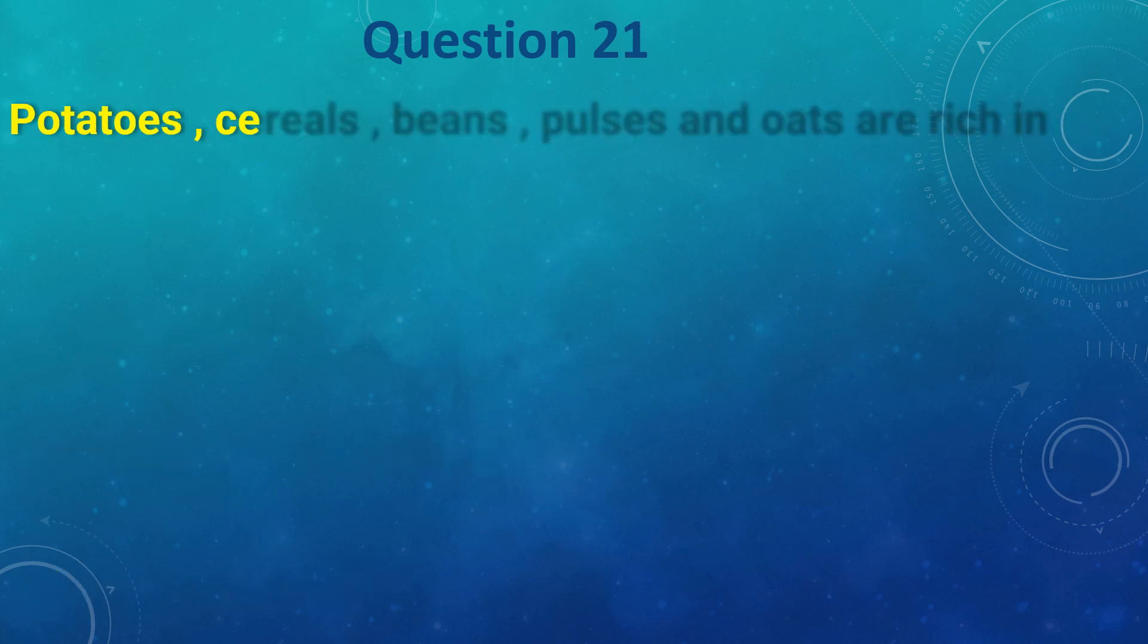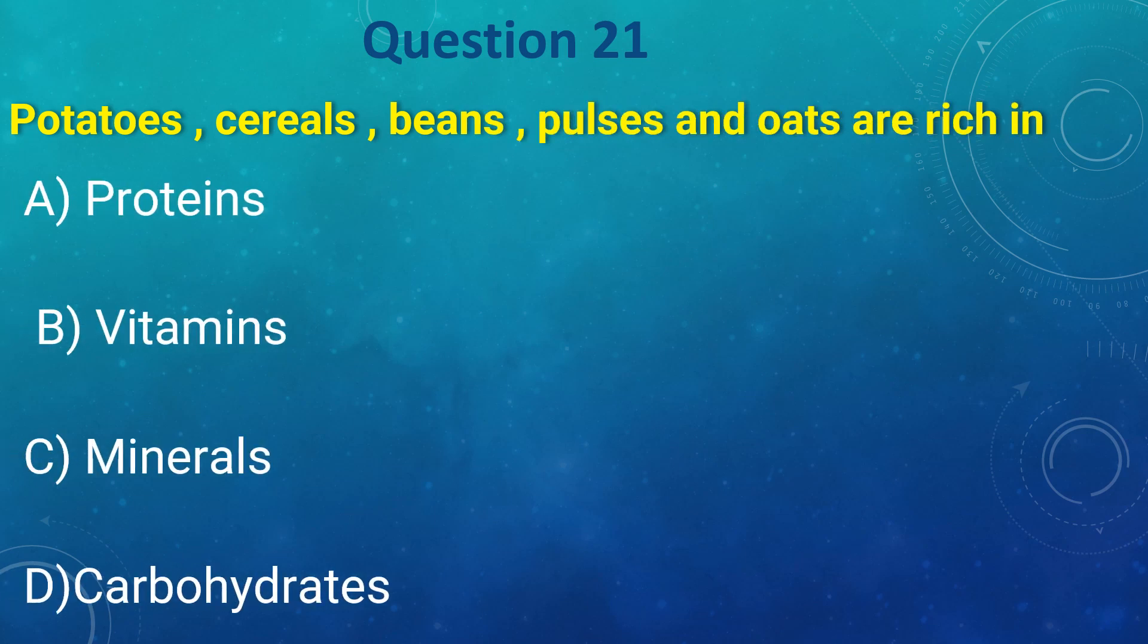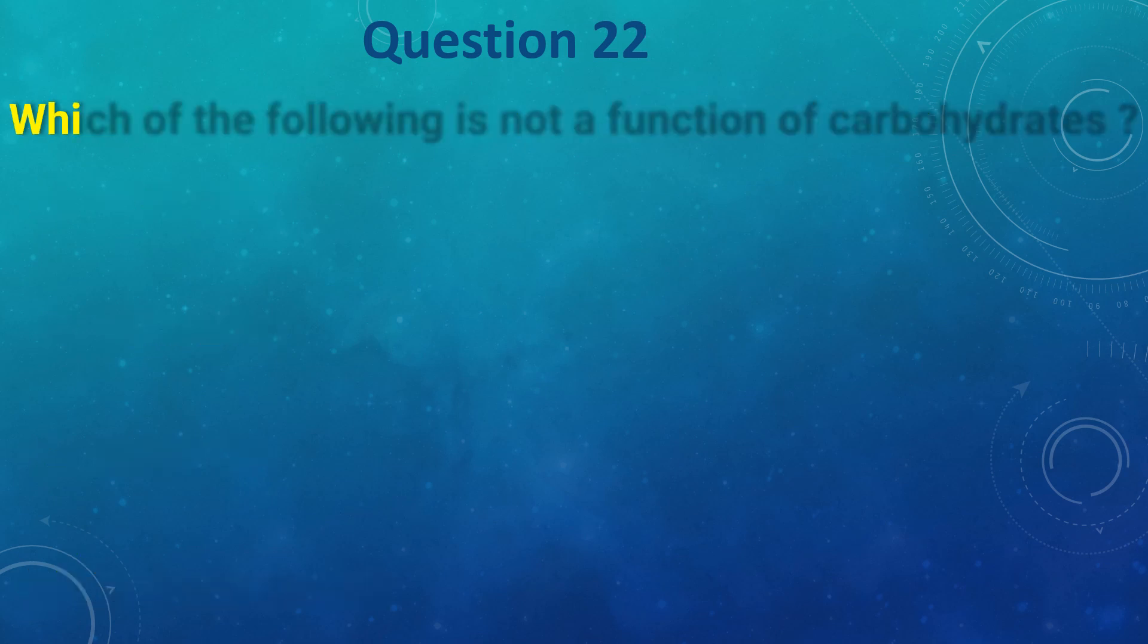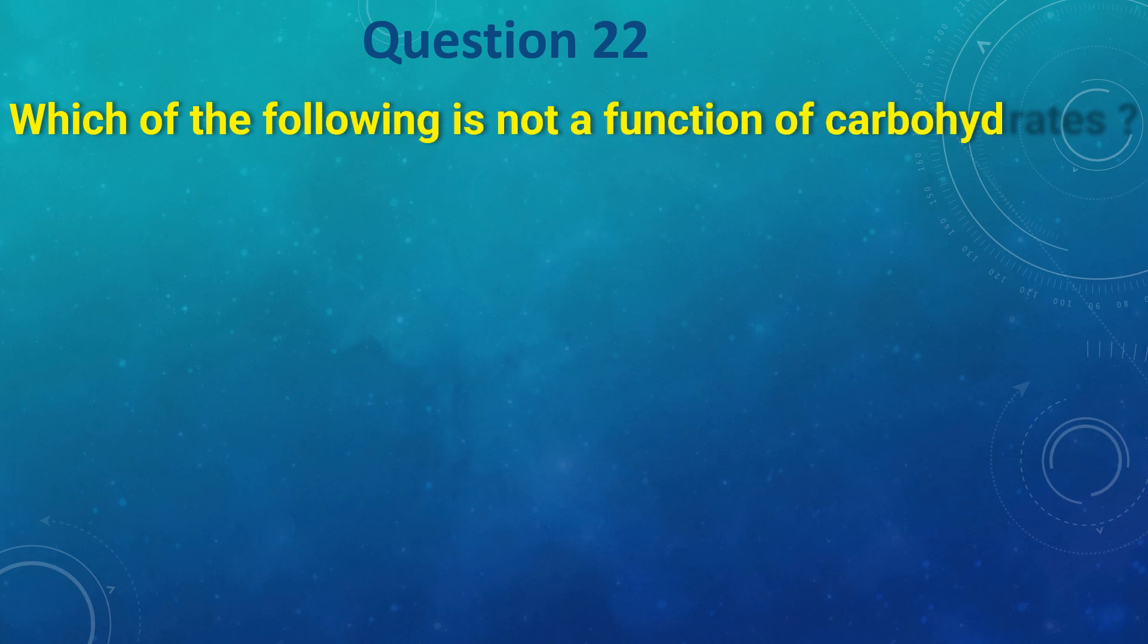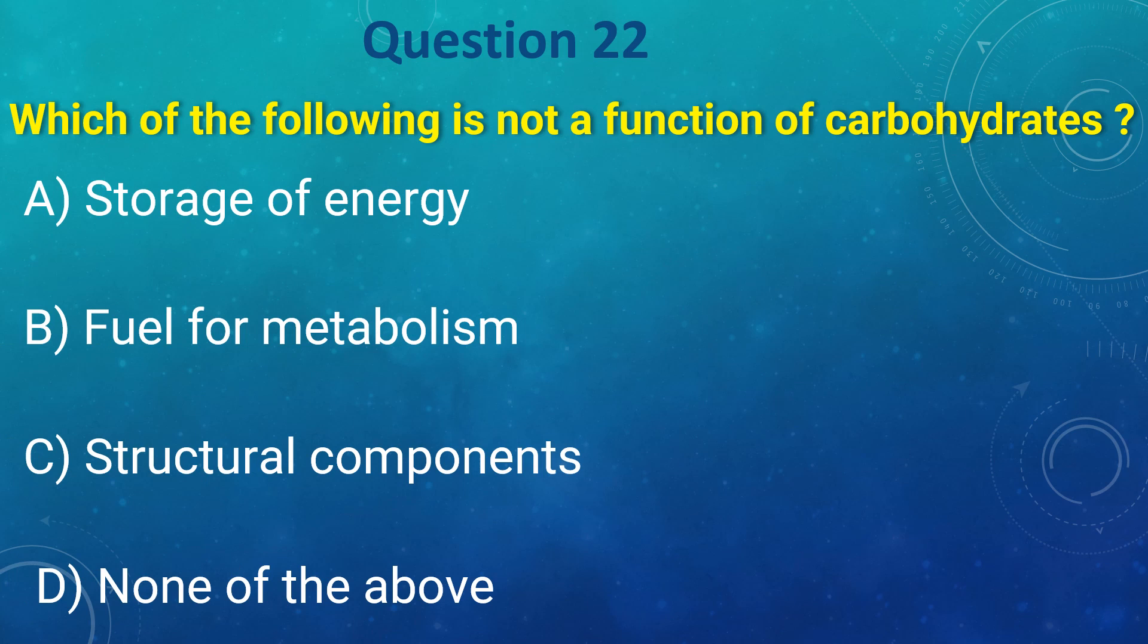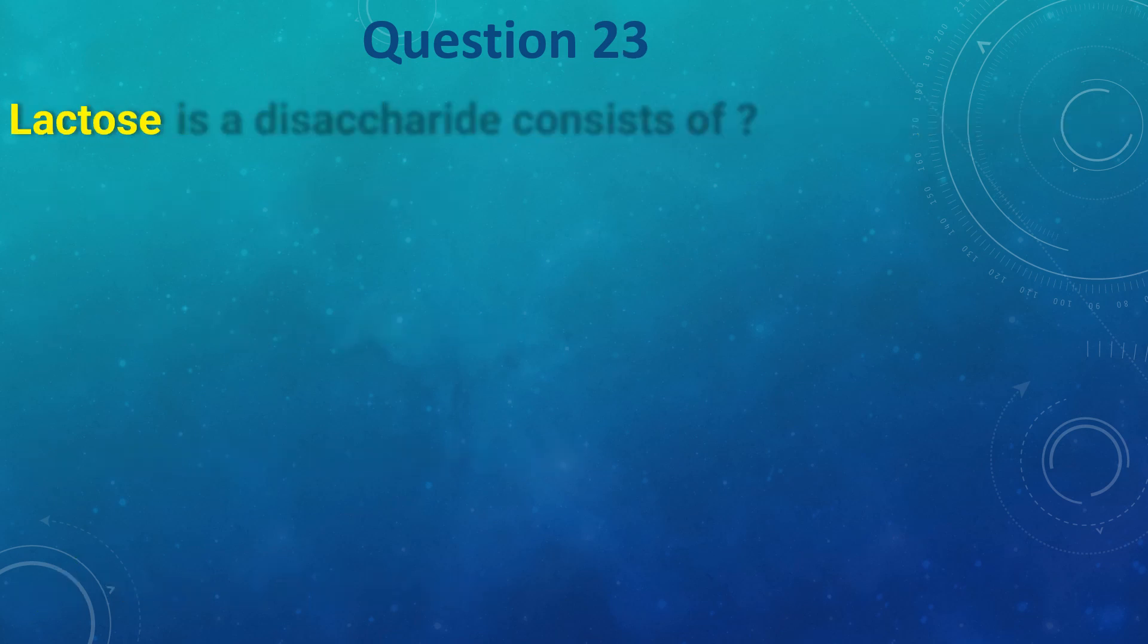Potatoes, cereals, beans, pulses and oats are rich in: a) protein, b) vitamins, c) minerals, d) carbohydrate. The answer is d) carbohydrate. Which of the following is not a function of carbohydrate: a) storage of energy, b) fuel of metabolism, c) structural component, d) none of the above. The answer is d) none of the above.